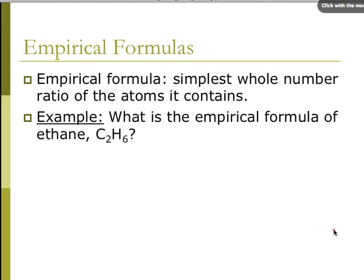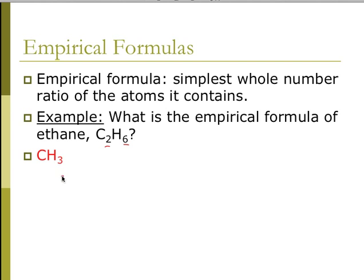You can see that it's got a 2 and a 6. They can both be divided by 2, so this is not the simplest whole number ratio. The simplest whole number ratio would be 1 carbon to 3 hydrogen, so the empirical formula would be CH3.